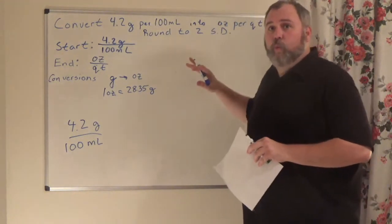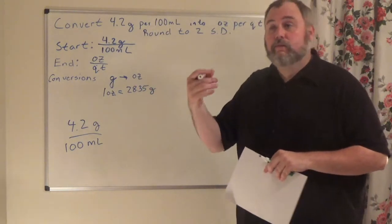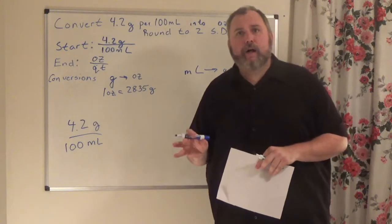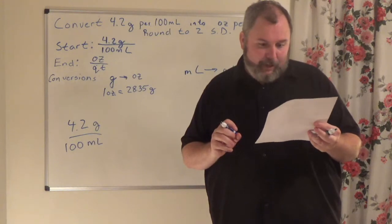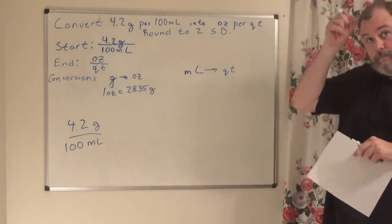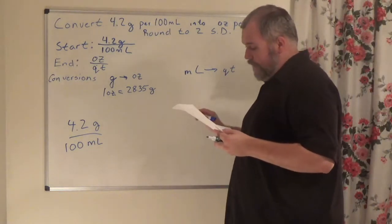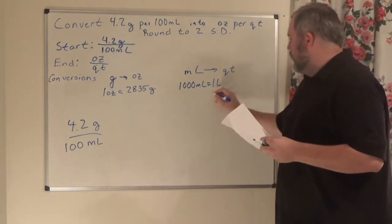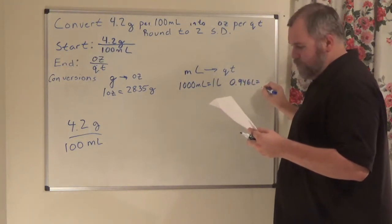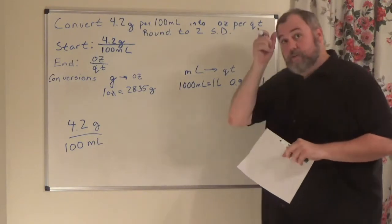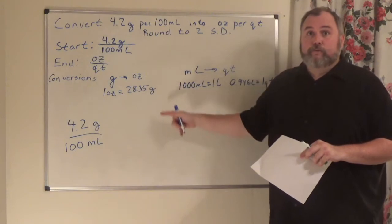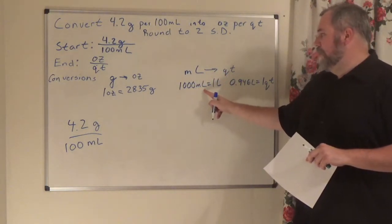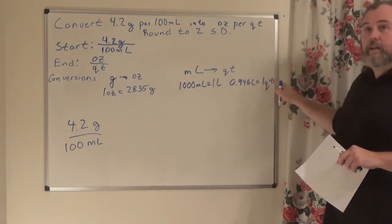Now we need the roadmap from milliliters to quarts — you'll need two conversion factors for this one. You should have found: 1,000 milliliters equals one liter, and 0.946 liters equals one quart. So our complete roadmap: grams to ounces uses one ounce = 28.35 grams; milliliters to quarts uses 1,000 mL = 1 liter, then 0.946 liters = 1 quart.